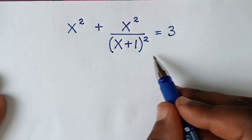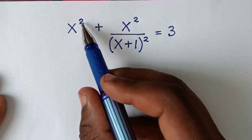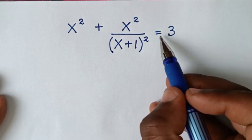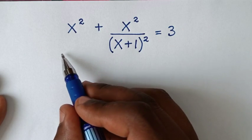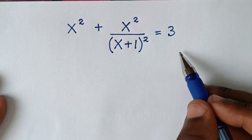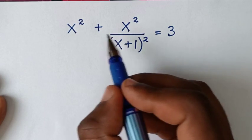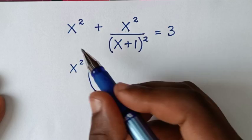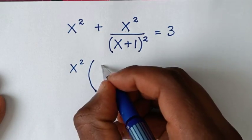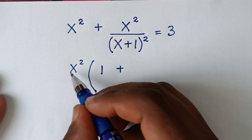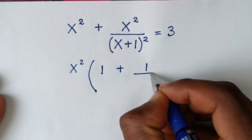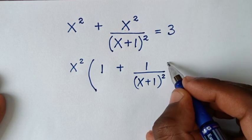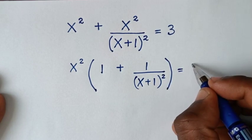Welcome. We are going to solve this math problem: x² + x²/(x+1)² = 3, to find the values of x. In the first step, x² is common, so we take x² out of the bracket. Then x²/x² is 1, plus x²/x² is 1, over the denominator (x+1)², equals 3.